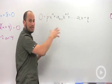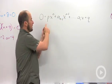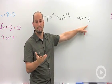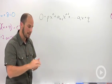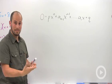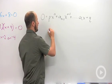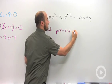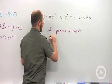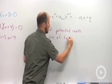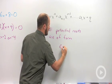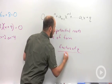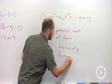Here, a sub n minus 1 is the coefficient on x to the n minus 1. For this particular example, all I've done is I've changed my first coefficient to a p and my last constant term to a q. Everything else is exactly the same. And what the rational roots theorem says is that all potential factors, all potential roots, all potential zeros, are of the form factors of q over factors of p.